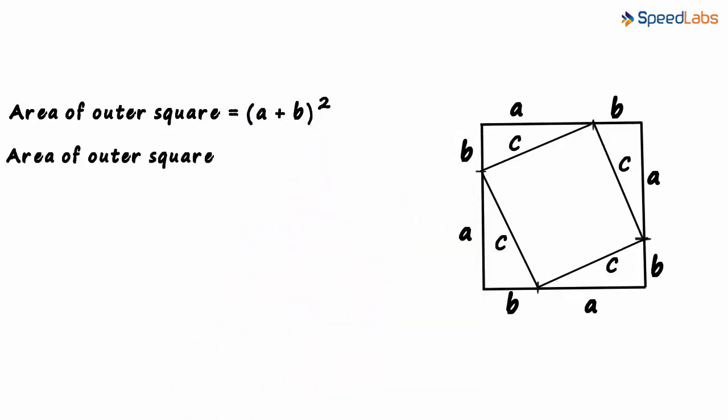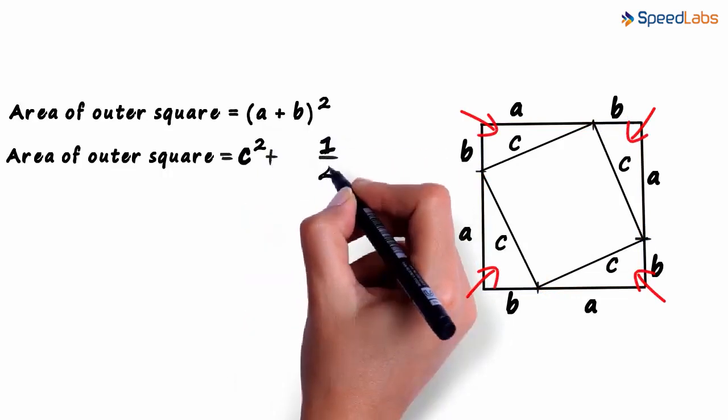And the area of the outer square also equals the sum of the areas of these five parts. The area of this square is c². Observe that each of these triangles will have the same area as their height and base is the same. Area of each triangle is ½ab.